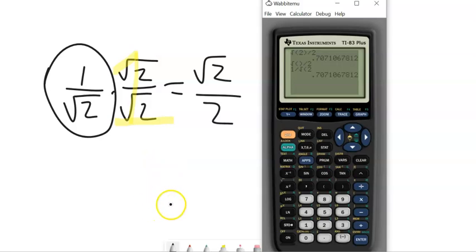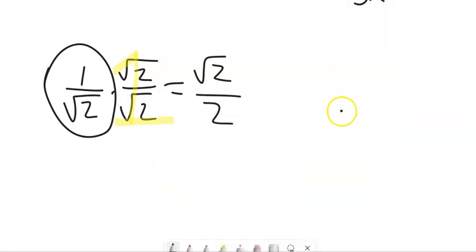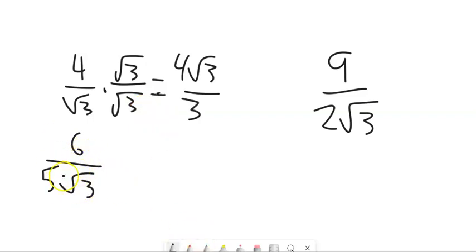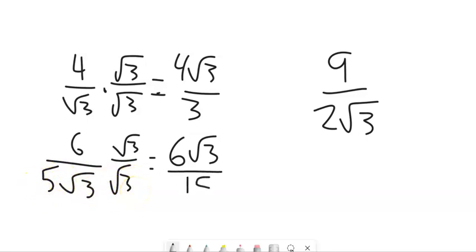So rationalizing the denominator is getting the radicals out of the denominator. So 4 over the square root of 3, I don't like the radical down there. Well, maybe I don't mind it so much, but I'm supposed to get it out of there. So I'm going to multiply by this version of 1. Notice that gives me 4 root 3 over root 3 times root 3 is 3. Now this problem is a little different. The 5 is fine. The root 3 is the thing that's giving me grief. So I'm going to multiply this one by root 3 over root 3 again. 6 root 3 up top. 5 times root 3 times root 3, that's a 3. 5 times 3 is 15.